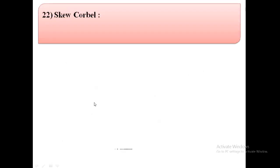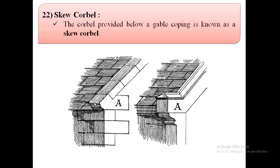The next term is skew corbel. A skew corbel is provided below a gable coping. As shown in the image, below the gable coping, a corbel is provided — this is known as the skew corbel.